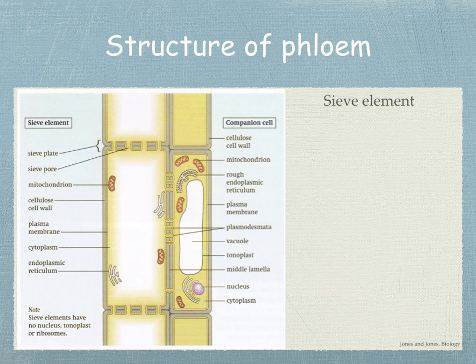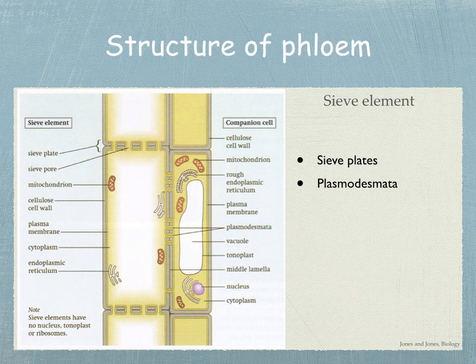The end walls, as you can see on the left there, are perforated by large pores. These perforated end walls are called sieve plates. You can also see plasmodesmata between the sieve element and the companion cells.